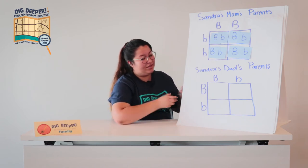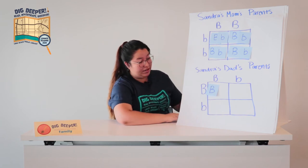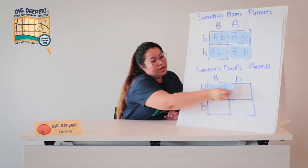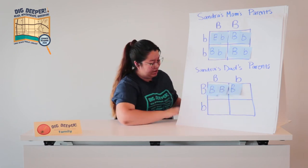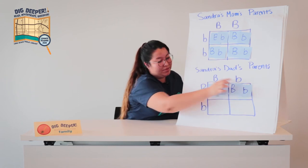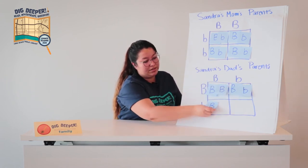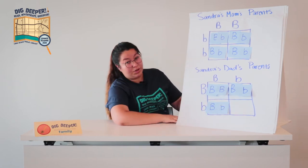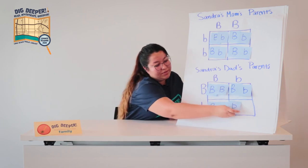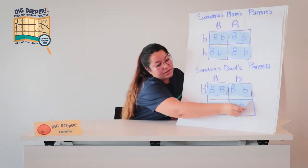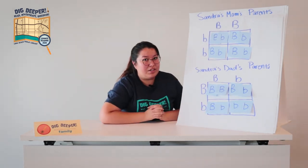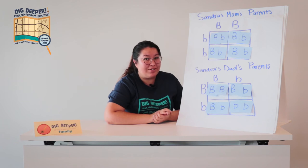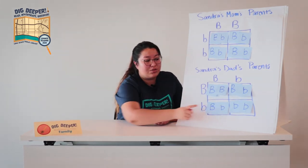So let's pair them up. We'll have big B and big B, big B and little b, little b and big B, and little b and little b. We can see dominant alleles in three of the four squares. That means Sandra's dad had a 75% chance of having brown eyes and only a 25% chance of having green eyes, thanks to those two recessive alleles.